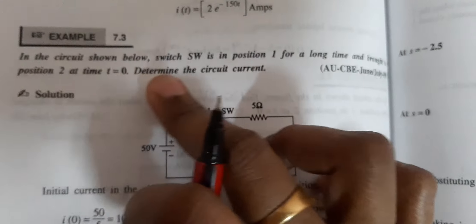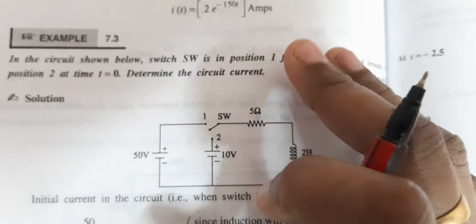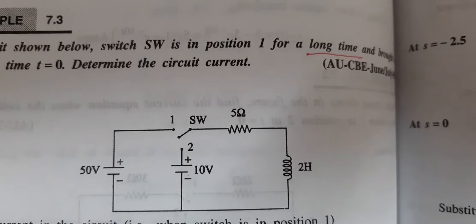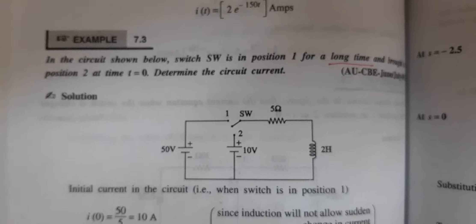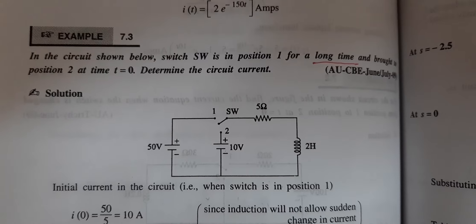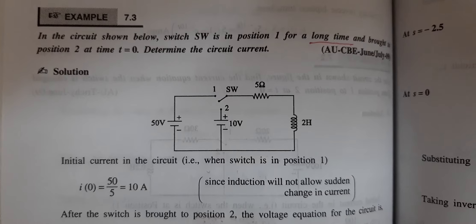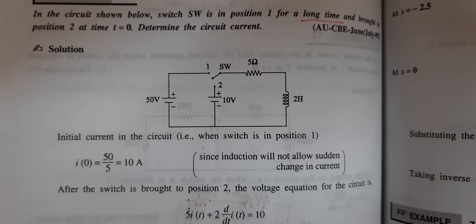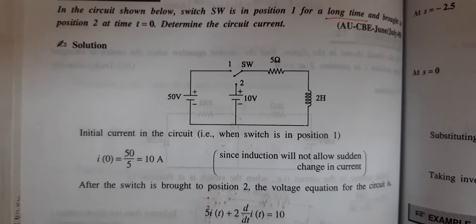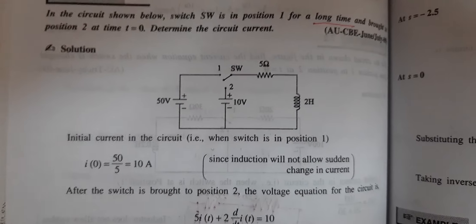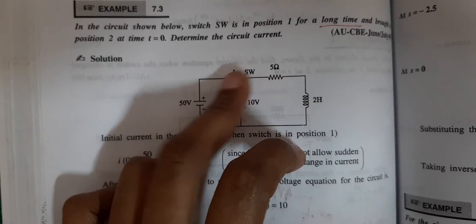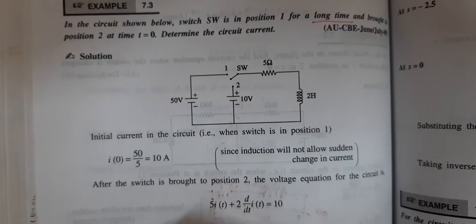Next problem: in the circuit shown below, the switch is in position 1 for a long time. This phrase 'long time' is very important in transient analysis. When the inductor has been in position 1 for a long time, a steady current flows. Now the switch moves to position 2.